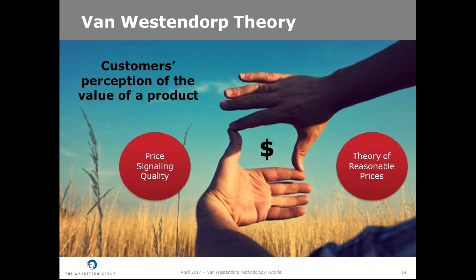Second, the model rests on the theory of reasonable prices. That is, it assumes that customers have some understanding of the estimated cost or range of prices that would be reasonable for a product. It means if your product is a novel game-changing product that nobody knows about — for example, a teletransportation system to get you from point A to point B at light speed — there is little value in using the Van Westendorp technique because your customers are not able to accurately define prices for your product.